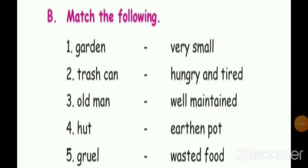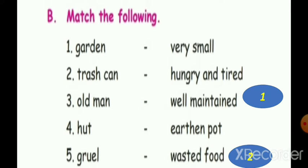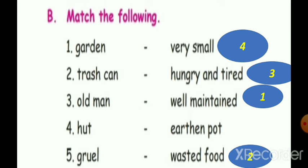Next we are going to see about match the following. First: garden — well maintained. Second: trashcan — wasted food. Third: old man — hungry and untired (Pussyyaan verandhaar, Roomba kalayipaam verandhaar). Fourth: hut — very small (Roomba siru daha yirindhadha). Fifth: gruel — Ethan pot (the thin porridge served in a pot).